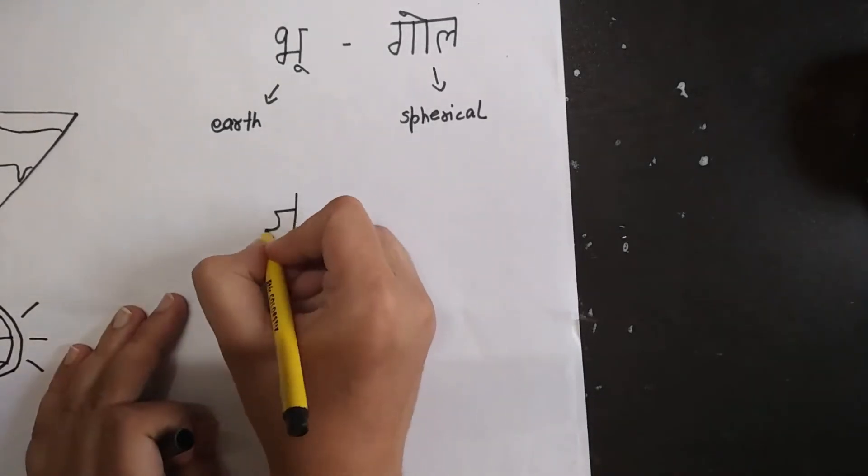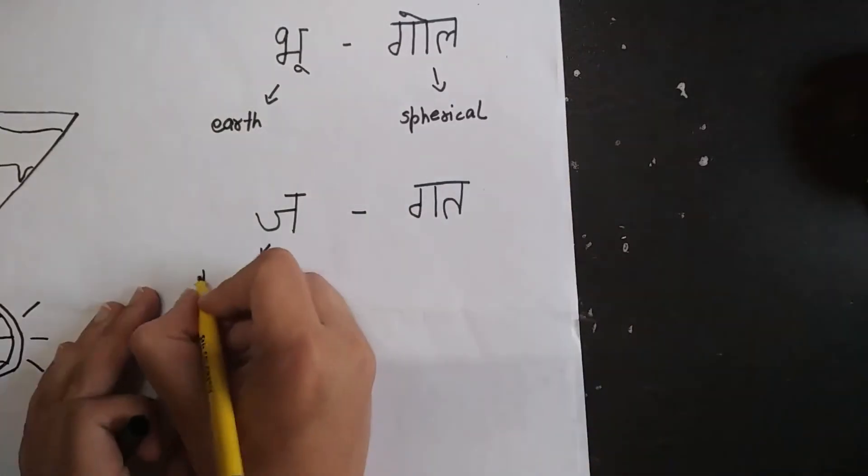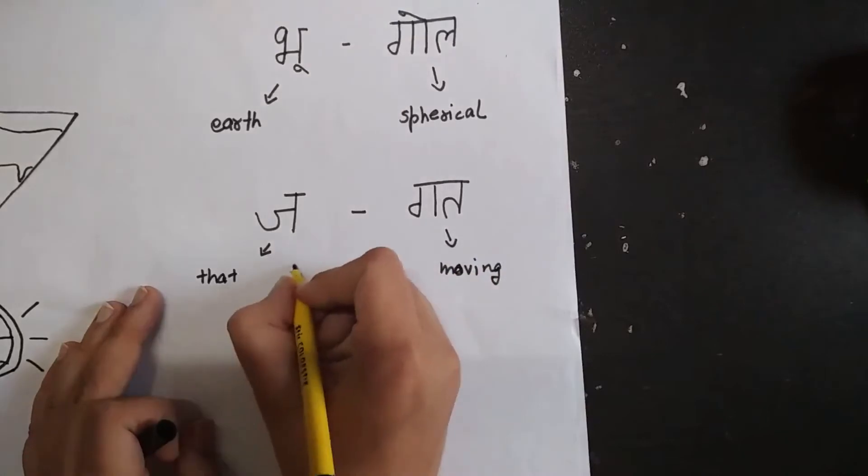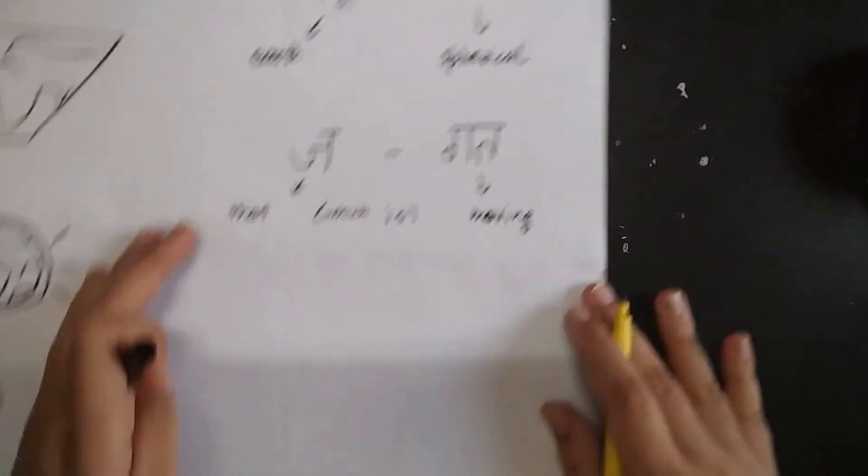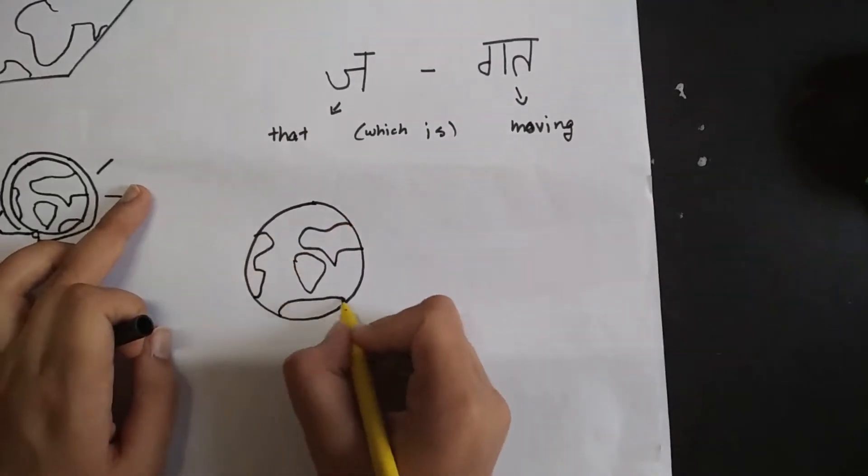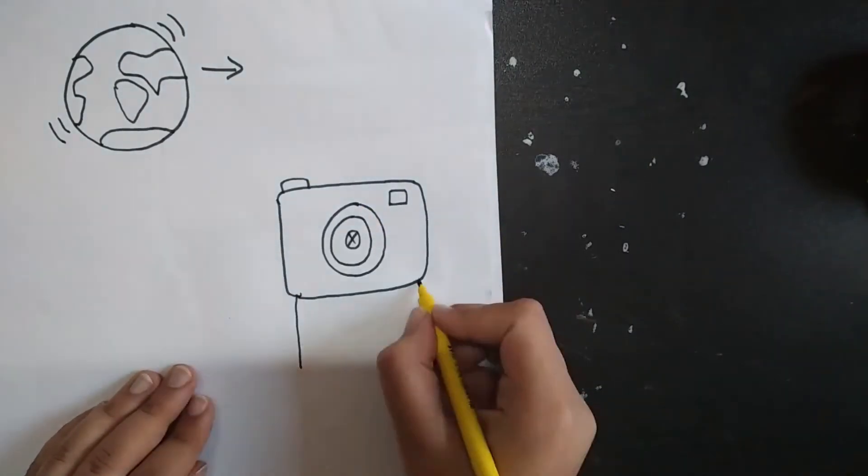Another interesting fact is that we call this Earth Jagat, literally meaning Jiski gati hai bo, that which is moving. So, we knew that the Earth is spherical and it is moving since the times that cannot be dated. And the Europeans required pictures from Apollo to believe it.